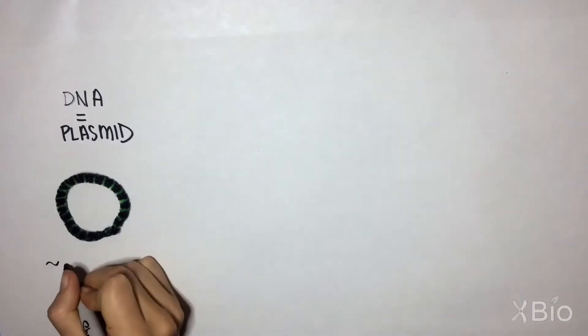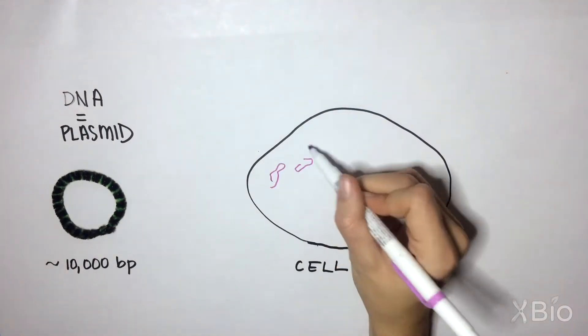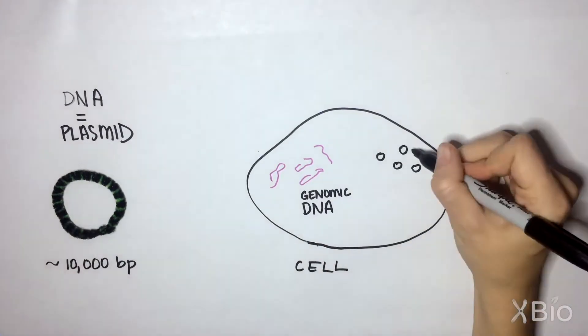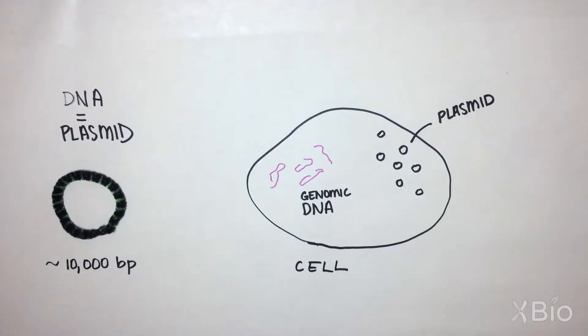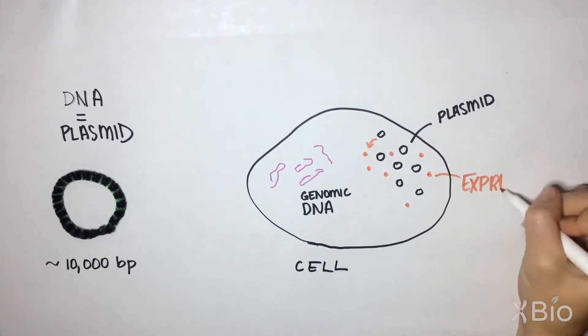For ease, we often work with small functional circular DNAs on the order of 10,000 base pairs called plasmids that express the DNA of interest. Plasmids can replicate and be maintained in a cell and remain independent of the genome, and they will continually express this protein of interest.